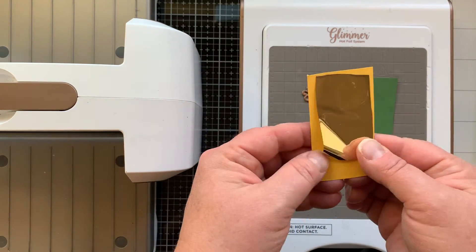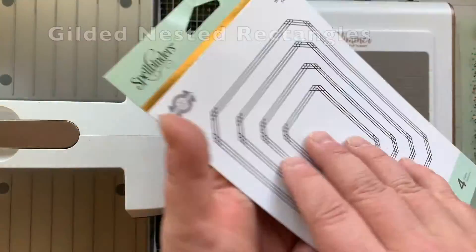Okay, so now I'm going to Glimmer Hot Foil a bunch more flowers and go ahead and die cut them out.